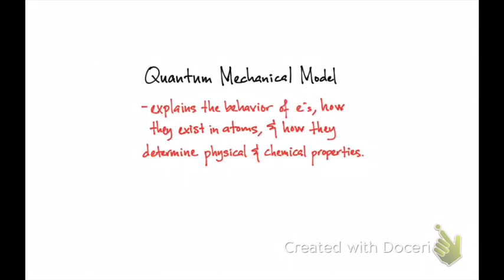In the previous chapter, you learned about different models of the atom — J.J. Thomson and the Plum Pudding model, and then Rutherford and his nuclear model. In this chapter, you learn about Bohr's model of the atom. But these models of the atom can't really explain a lot of phenomena, so chemists and physicists had to find a way to explain the behavior of electrons a little bit better.